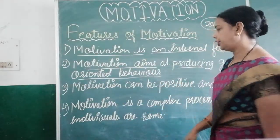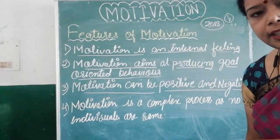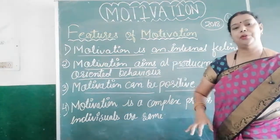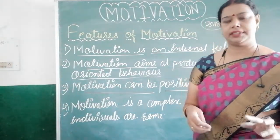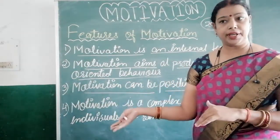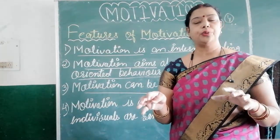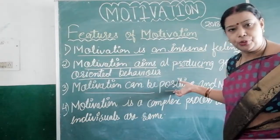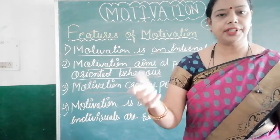Number 3: motivation can be positive as well as negative. For example, in a newspaper, 1–2 pages carry positive news, while 4–5 pages contain negative news — accidents, murders, and other incidents. Seeing such negative news can also motivate someone. Positive motivation leads people toward top-level results.